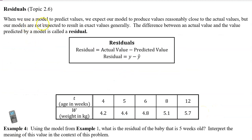When we use a model to predict values, we expect our model to produce values reasonably close to the actual values. But our models are not expected to result in exact values generally. The difference between the actual value and the value predicted by a model is called a residual. So, we have this formula for residuals. The residual is equal to the actual value minus the predicted value.